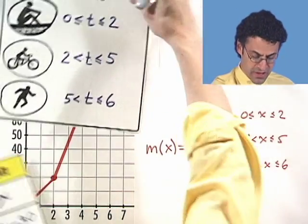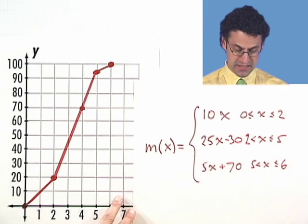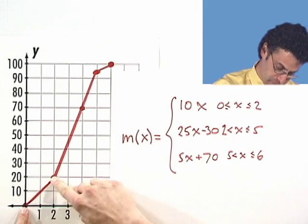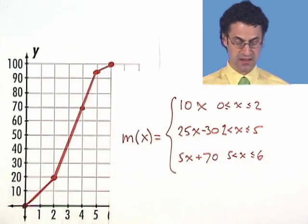These are the intervals and graphically it looks like this. So you can see all of these things coming together. We have three lines here and they're represented by this line, that line, and that line. Pretty neat stuff. You can see how we can put together pieces of a function to create piecewise functions. Very cool.